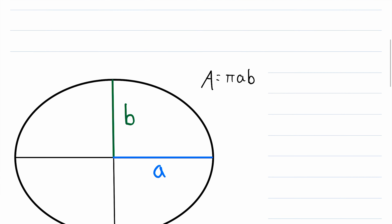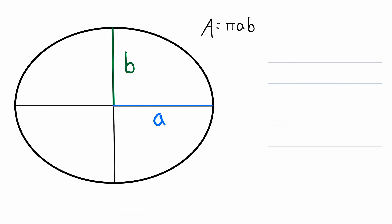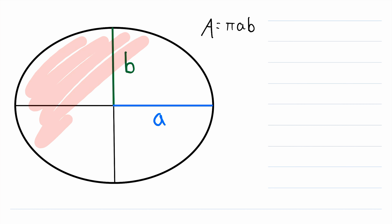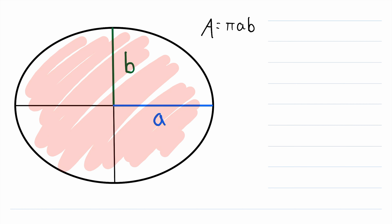So here we go — we've got our beautiful hand-drawn ellipse right here. I haven't drawn the two foci of this ellipse because those are not relevant to this lesson. But remember, the two foci of an ellipse lie on the major axis, so in this ellipse they'd be about right there and about right there. But we don't need those today. So if we want to find the area of an ellipse — this area that I'm highlighting — how do we do it?